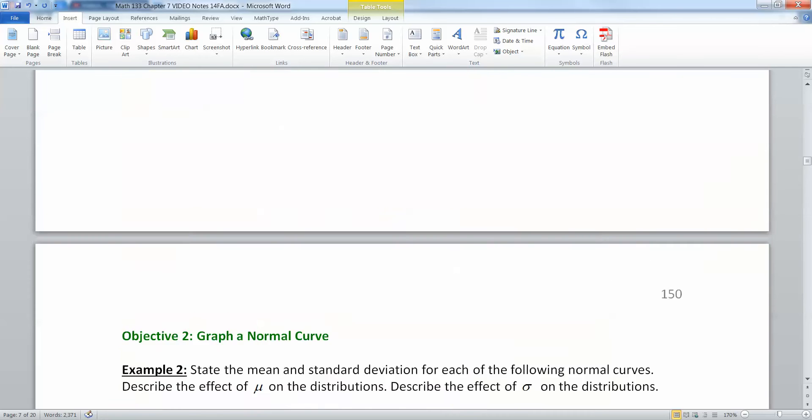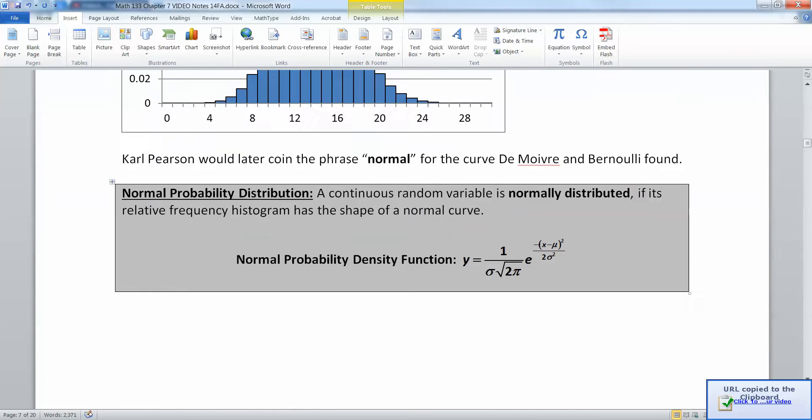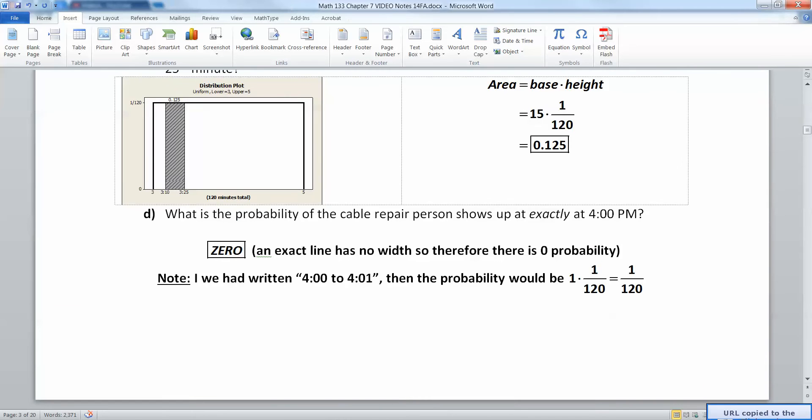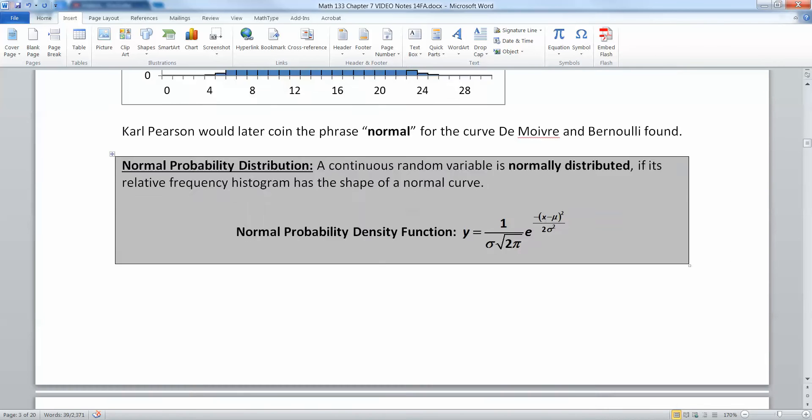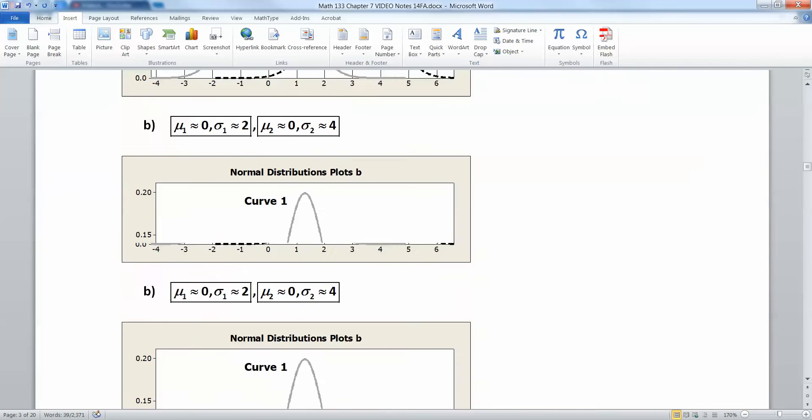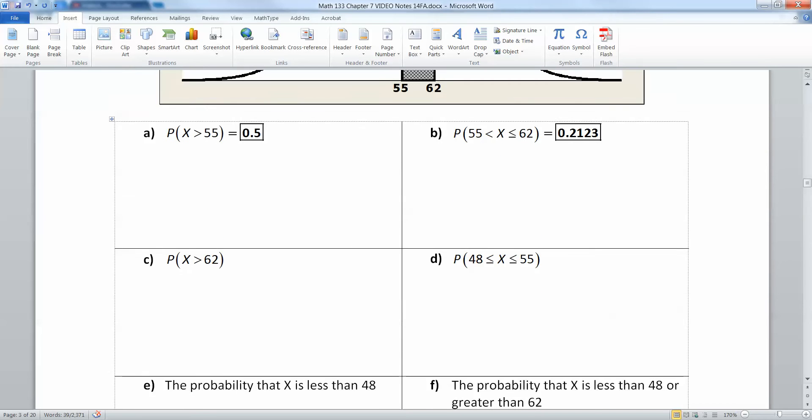Believe it or not, it all comes back to the same thing we learned about with the cable repair person several pages ago, that every particular line has a probability of 0. So it doesn't matter whether you include the line or not.